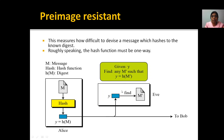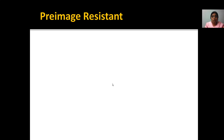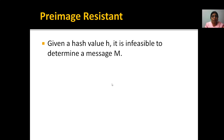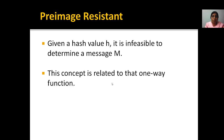Whenever you are taking the hash code, this hash code may not be the same hash code when you apply the hash function to Y — this may not produce the same hash code. This is nothing but pre-image resistance. Given a message digest, you cannot find the original message. You can find the hash code, but you cannot find the message. Given a hash value, it is infeasible to determine the message. The concept is related to the one-way function.